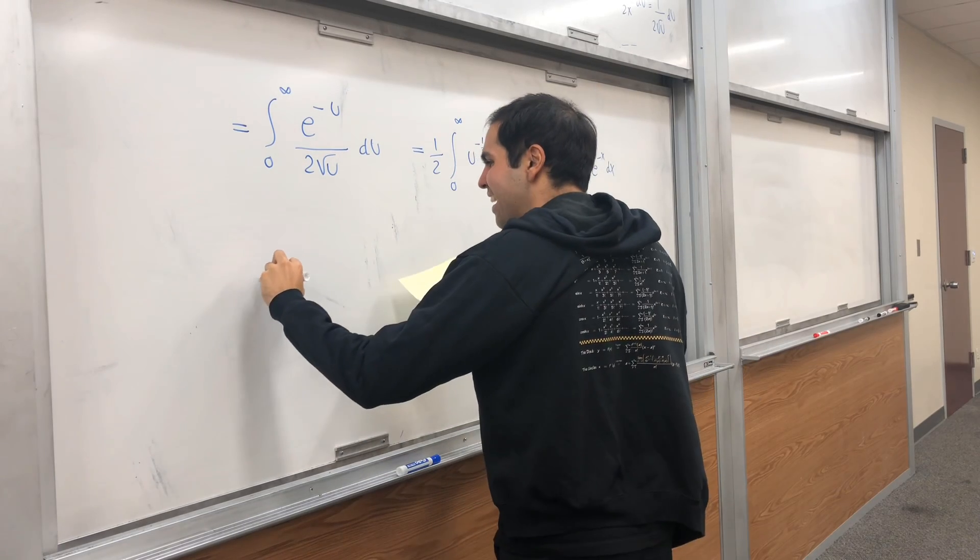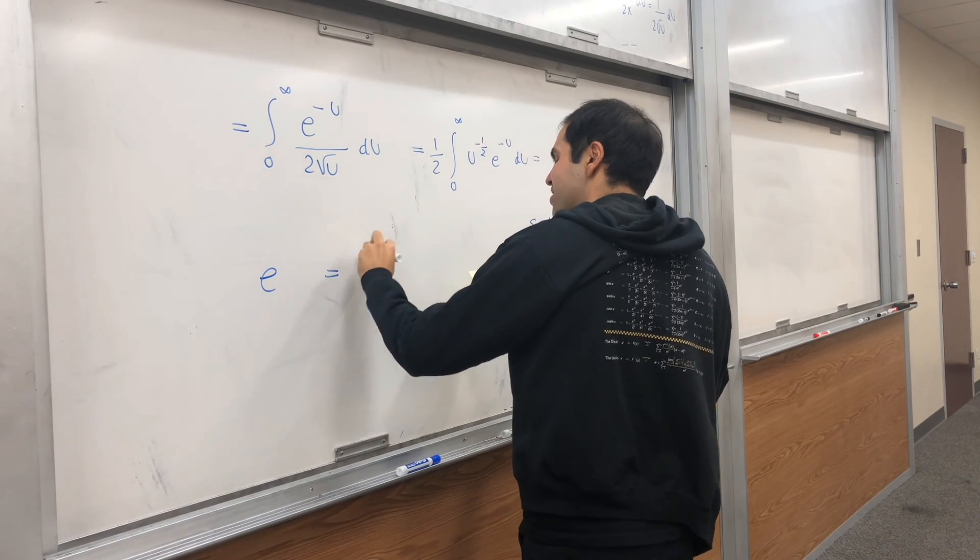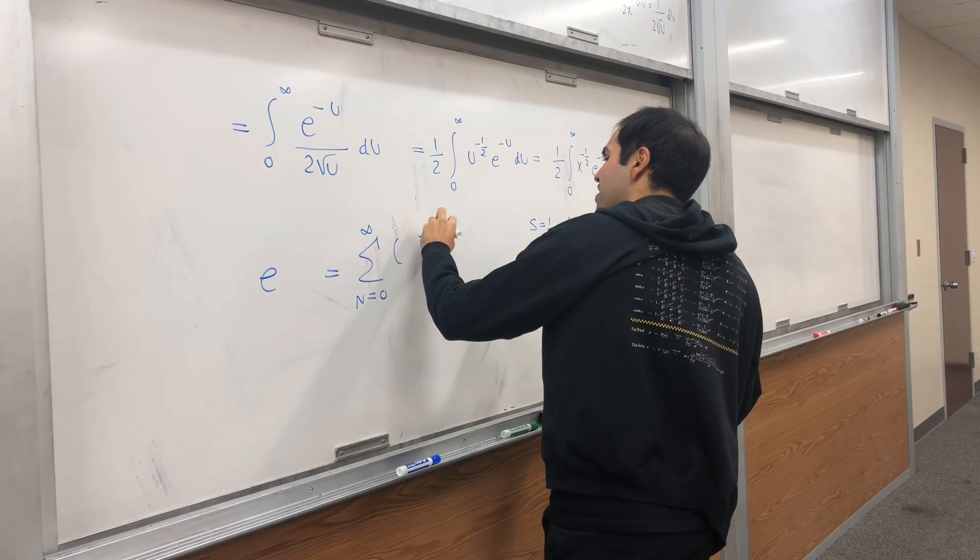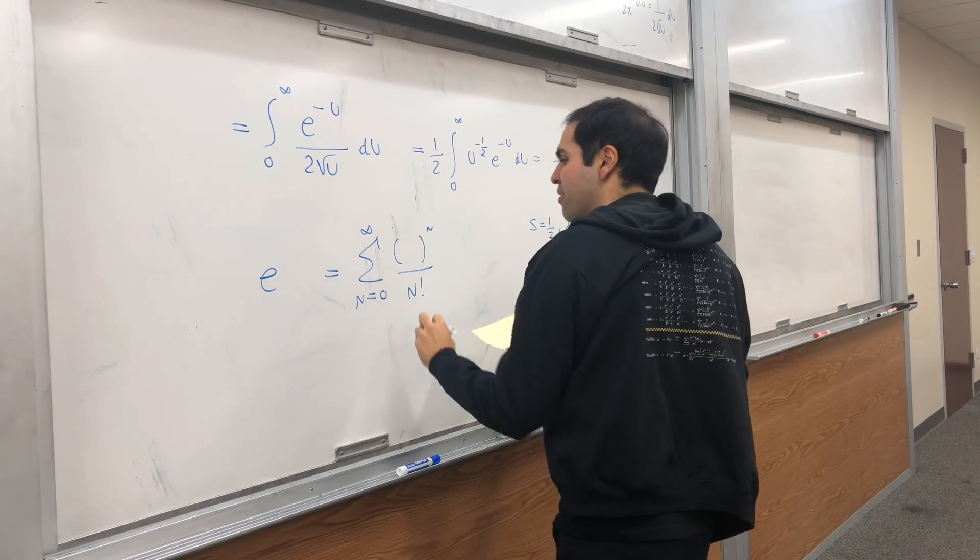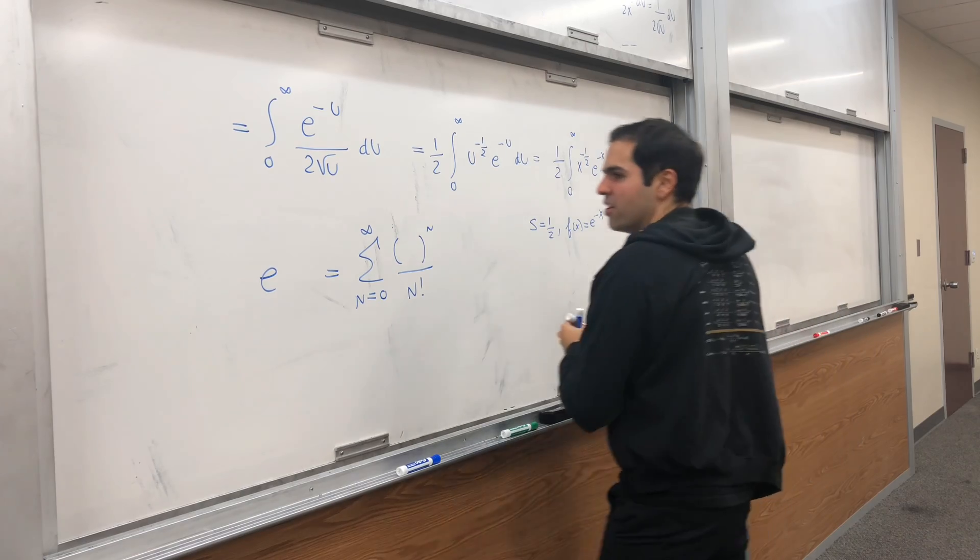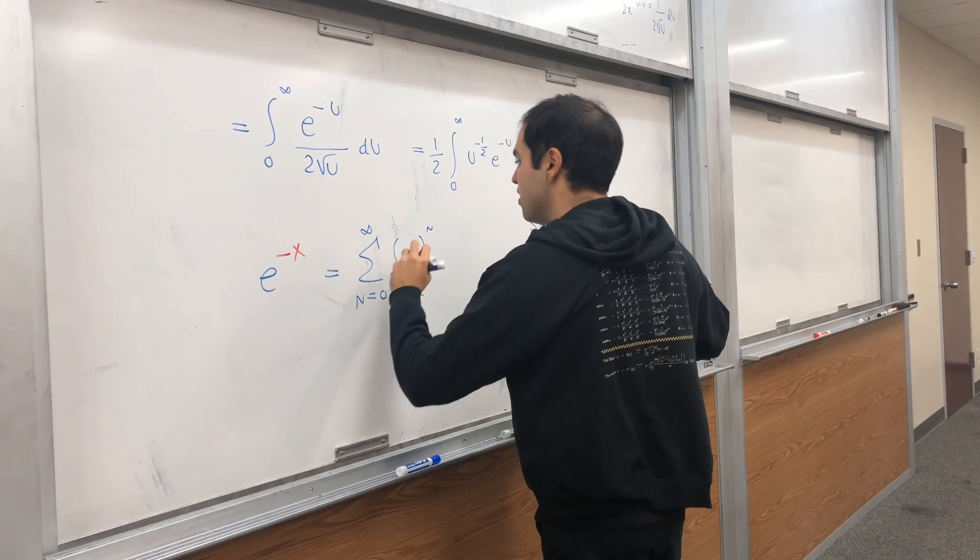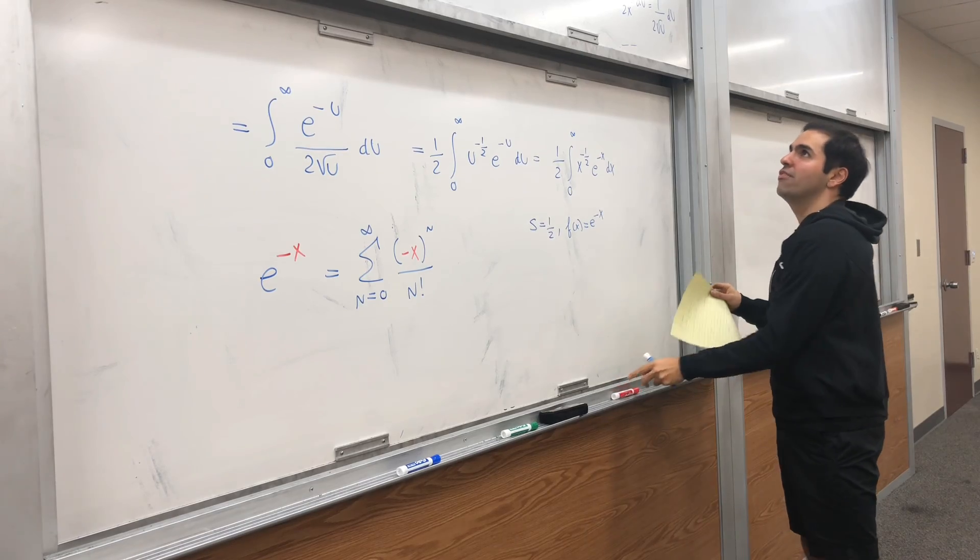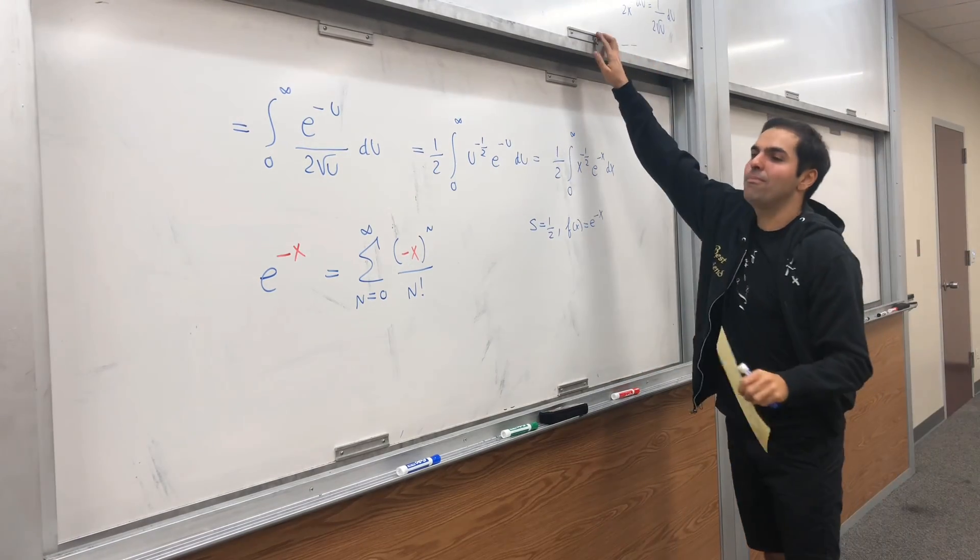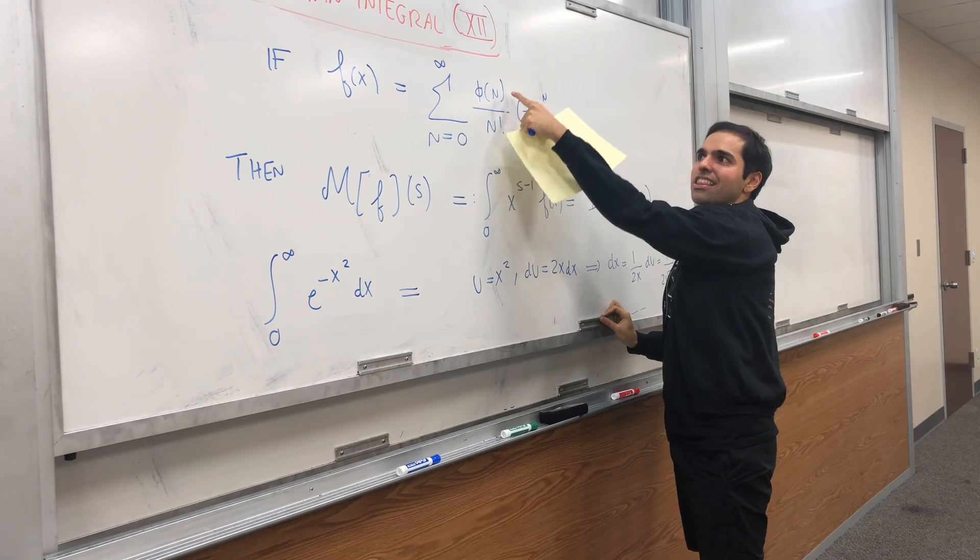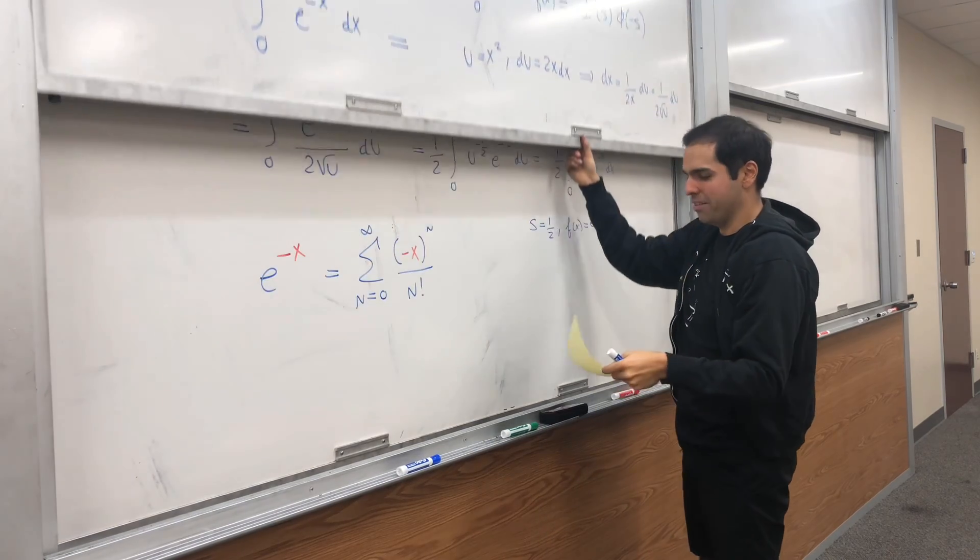We know that e to the x is equal to the sum from 0 to infinity of x to the n over n factorial. Well, e to the minus x then just becomes sum of minus x to the n over n factorial.